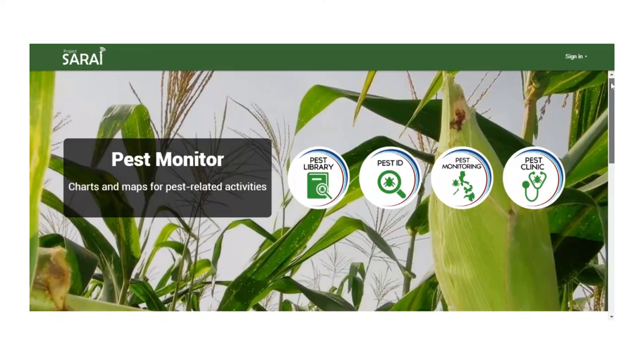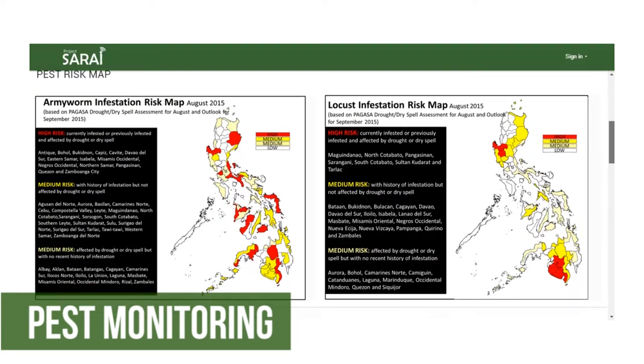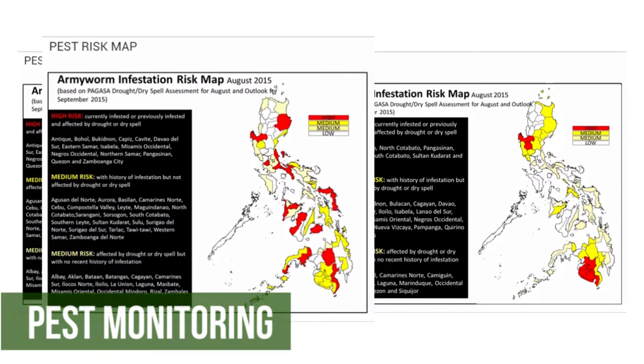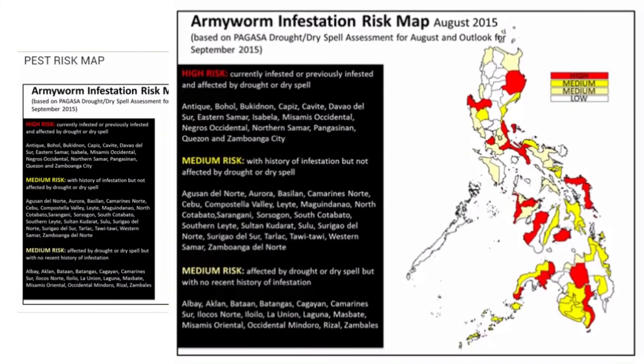Next is the pest monitoring. Using this module, you can see a map that identifies possible areas that are at risk of pest infestations.